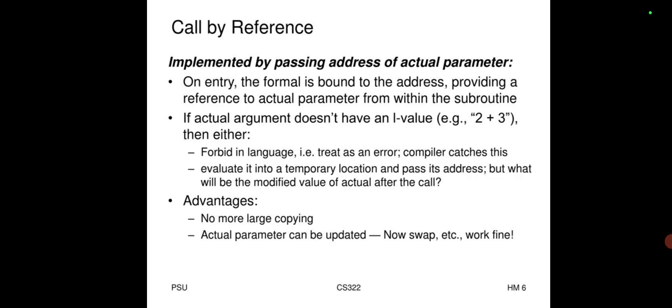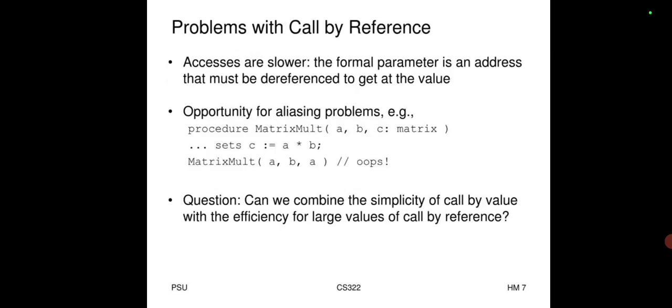Call by reference is implemented by passing the address of the actual parameter. On entry, the formal is bound to the address, providing a reference to the actual parameter from within the subroutine. If the actual argument does not have an l-value (e.g., 2+3), the language either forbids it as an error, or evaluates it into a temporary location and passes that address. Advantage: no large copying; actual parameters can be updated — swap etc. work fine.